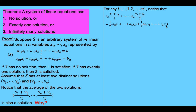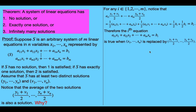Since they are solutions, the first part equals b sub i and the second part also equals b sub i. So we get 1/2 times b sub i plus 1/2 times b sub i, which equals b sub i. Therefore, the i-th equation is true when x sub 1 to x sub n is replaced by this average n-tuple. So we've now shown that there are at least three solutions.